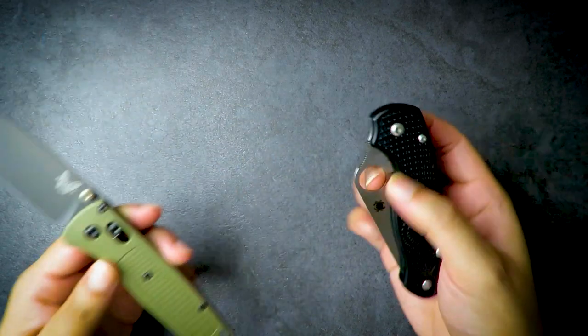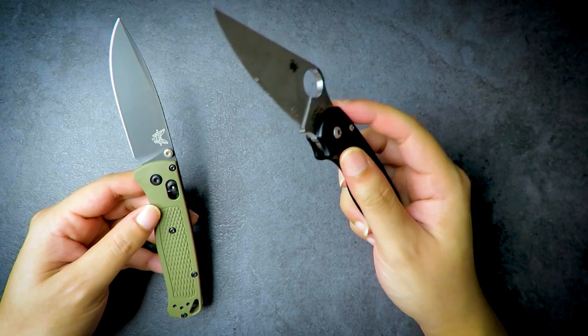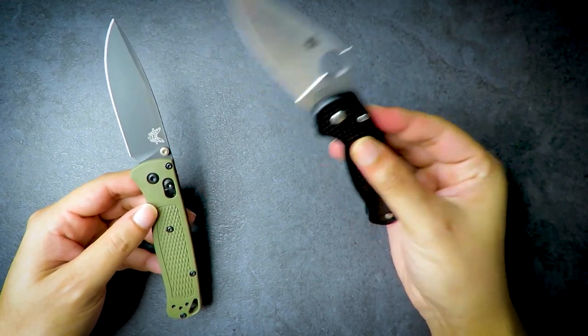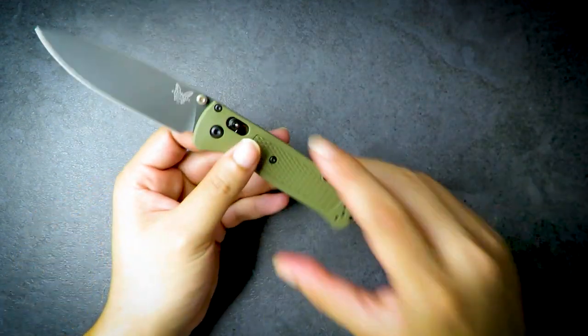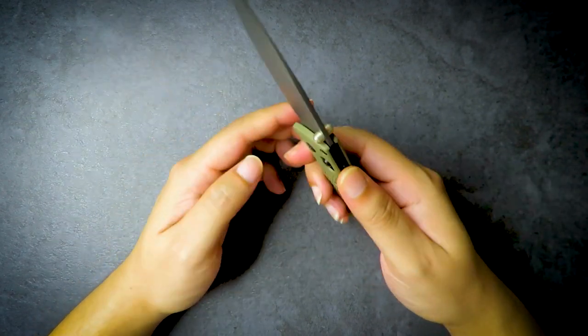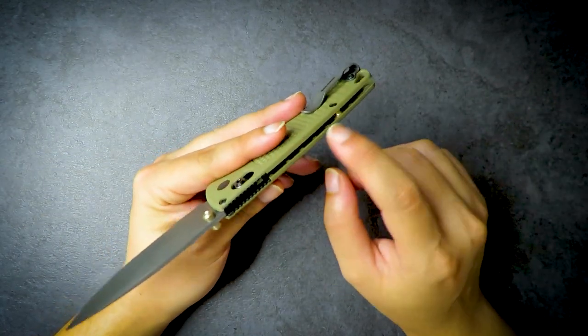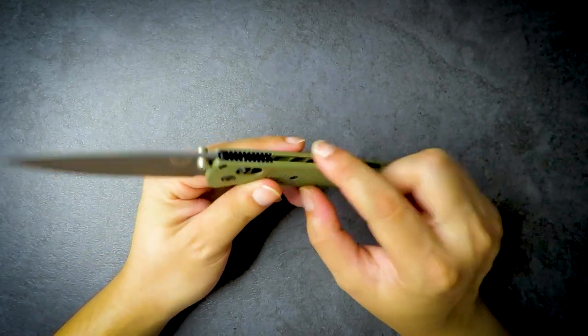One thing I realized is compared to other FRN handles like this Para 3 Lightweight, this guy tends to feel smooth and has been proven to be slippery. I've dropped this a few times. The Bugout's grivory handles have nice texturing, so definitely feels grippier. However, being FRN, it is a little bit sharp on the inside edges.